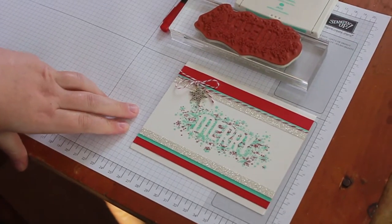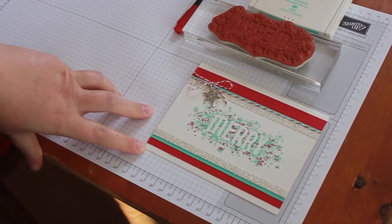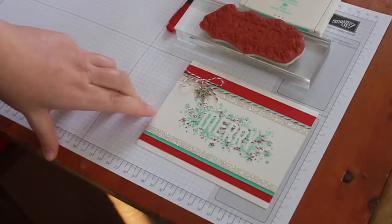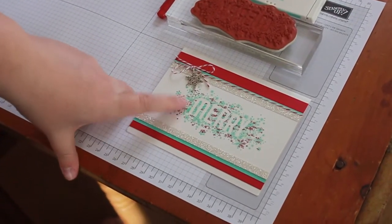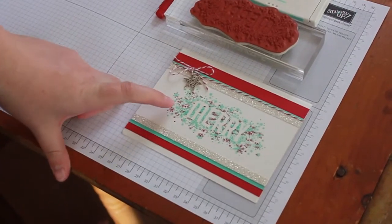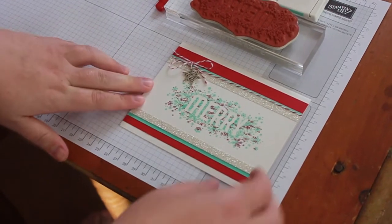I shared this card on my blog recently, and it uses a technique called thumping to get the multicolored stamped image. I just want to show you real quick how to do that technique today.